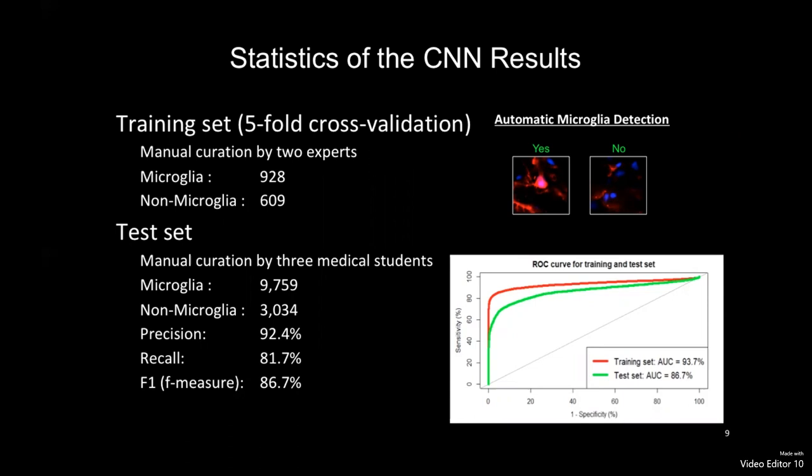These results suggest that CNN can be useful to recognize microglia cells and provide a high-throughput tool for the analysis of histology images. Thank you for your attention.